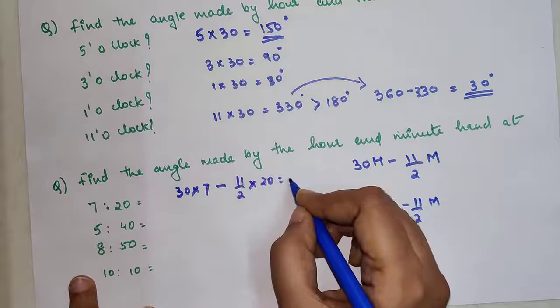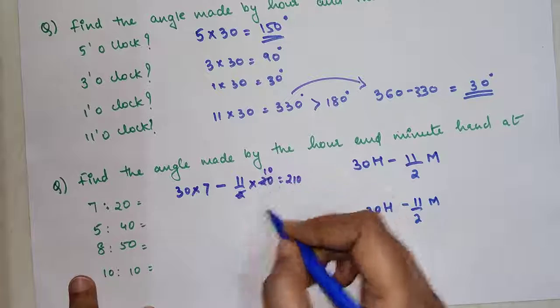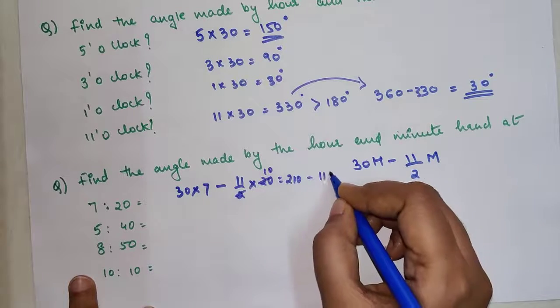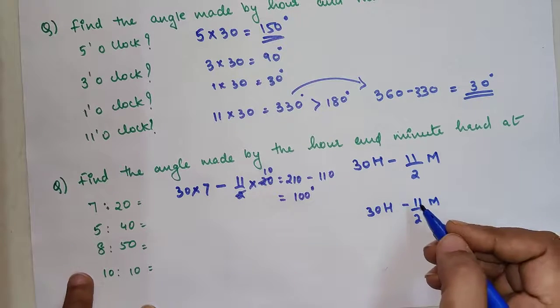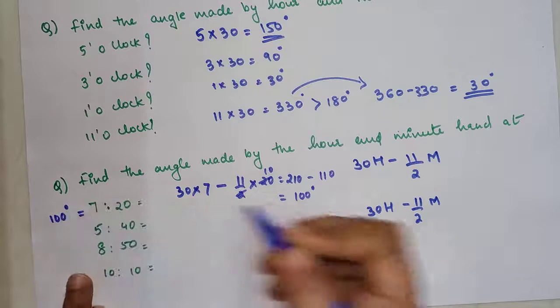So 30 into 7 is 210 minus this is 10s, so minus 11 into 10 is going to get you 110. So your answer is just 100 degrees. So for this one I am writing the answer over here, it is 100 degrees.